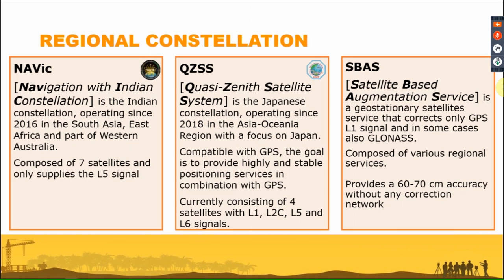Then we have QZSS — the Quasi-Zenith Satellite System — a Japanese constellation operating since 2019 in the Asia-Oceania region with a focus on Japan. It is compatible with GPS and aims to provide highly stable positioning in combination with GPS. It currently consists of four satellites with a multi-frequency system: L1, L2C, L5, and L6 signals.